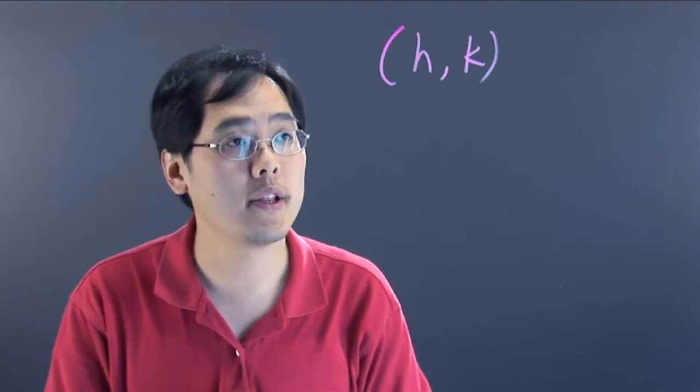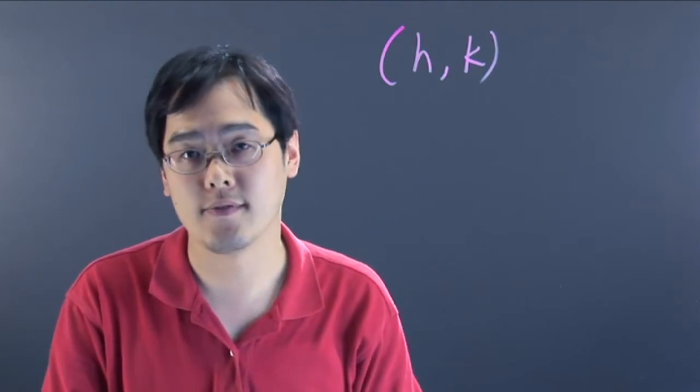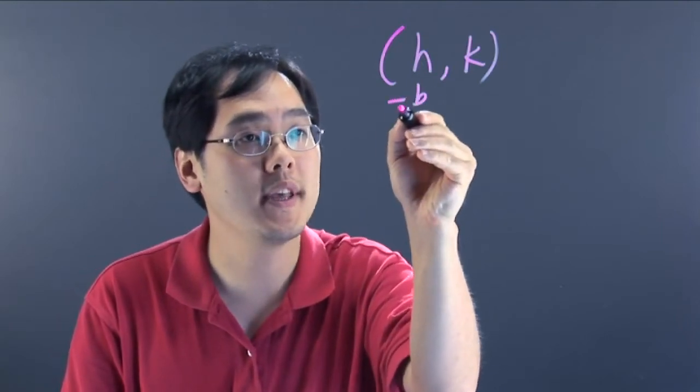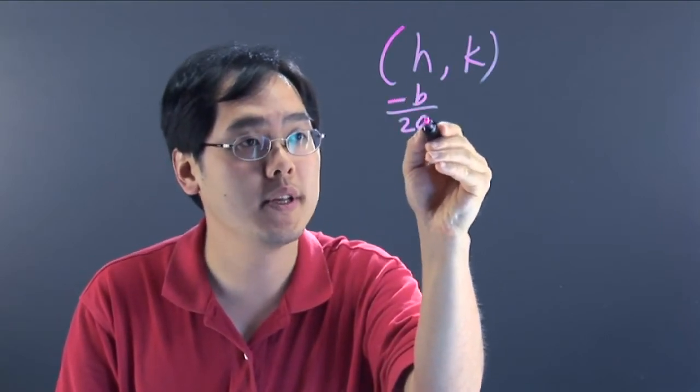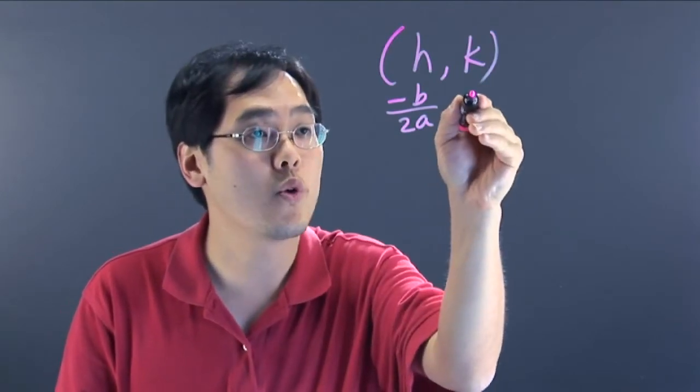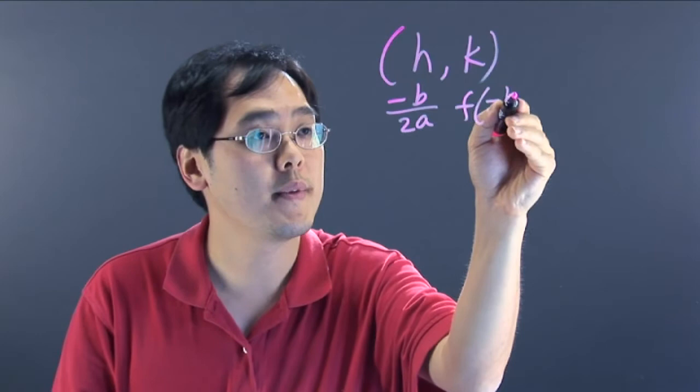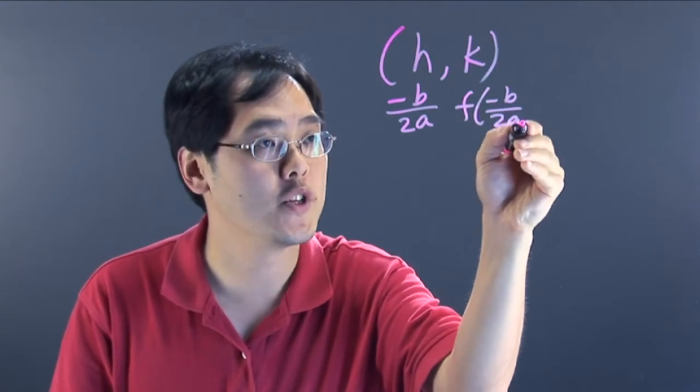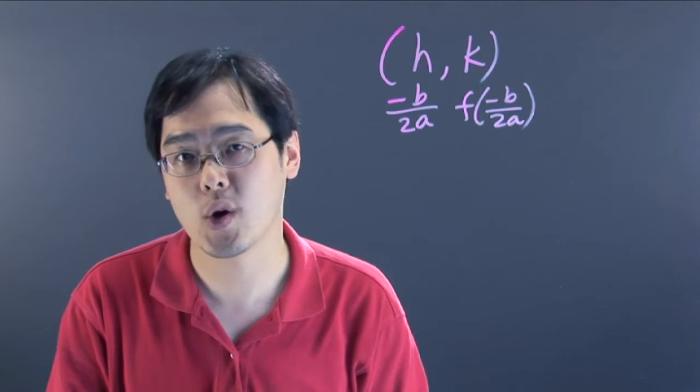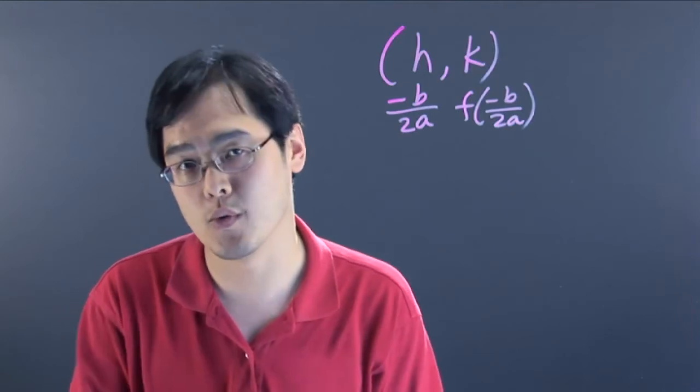If you have the polynomial and you want to find the vertex, then the x coordinate of the vertex of the parabola can be thought of as negative b over 2a, that's the x coordinate, and the y coordinate can be thought of as f of negative b over 2a. All you're really doing here is you're plugging in the x coordinate to find the y coordinate of the vertex, the tip, if you will.